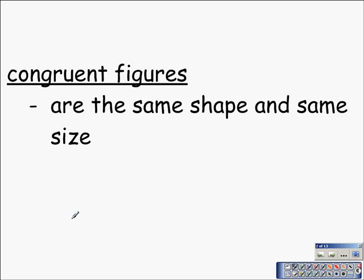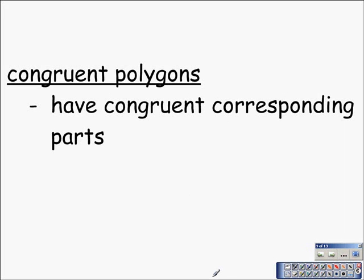First, we have a definition of congruent figures. Congruent figures are the same shape and the same size. Specifically, a congruent polygon — congruent polygons have congruent corresponding parts, which means corresponding sides must be congruent and corresponding angles must be congruent. So let's take a look at what that means: congruent corresponding parts.